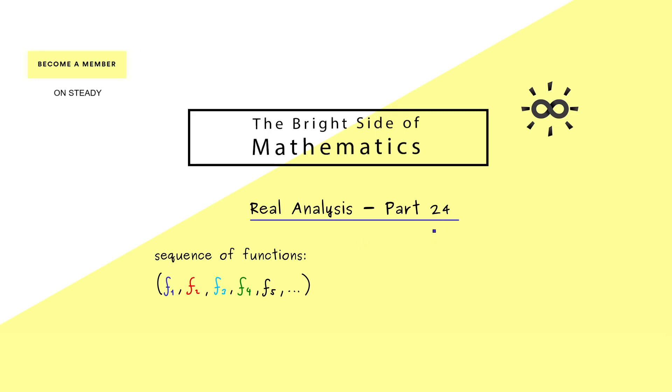Please remind yourself that we have already learned in the last video what a sequence of functions is. For all indices n we get a function fn that has the domain I. Now such a sequence can have a convergence property we call pointwise convergence.